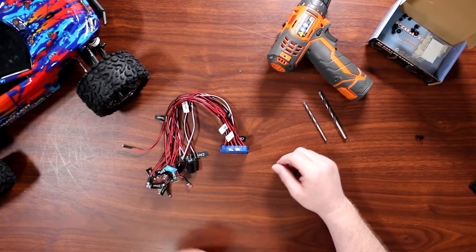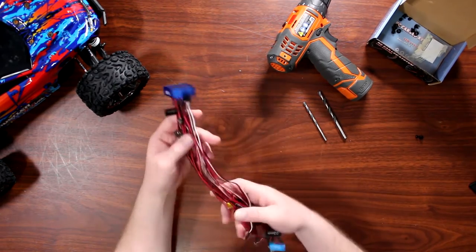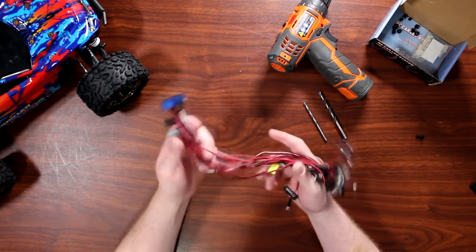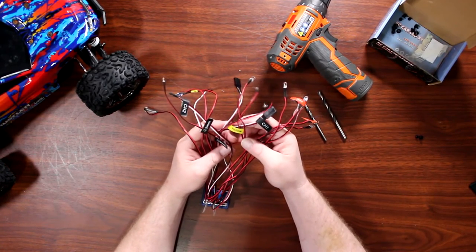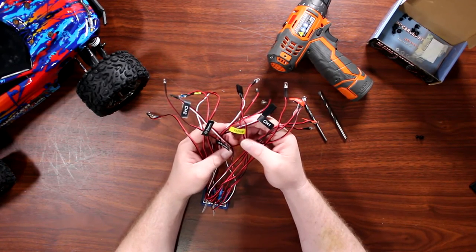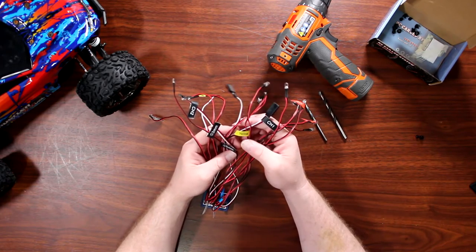Hey guys, welcome to another video by DJSPRC. Today I want to show you how to install a light kit. Basically this guy here is a light kit that has turn signals, high beam, low beam, backup light, and brake lights.